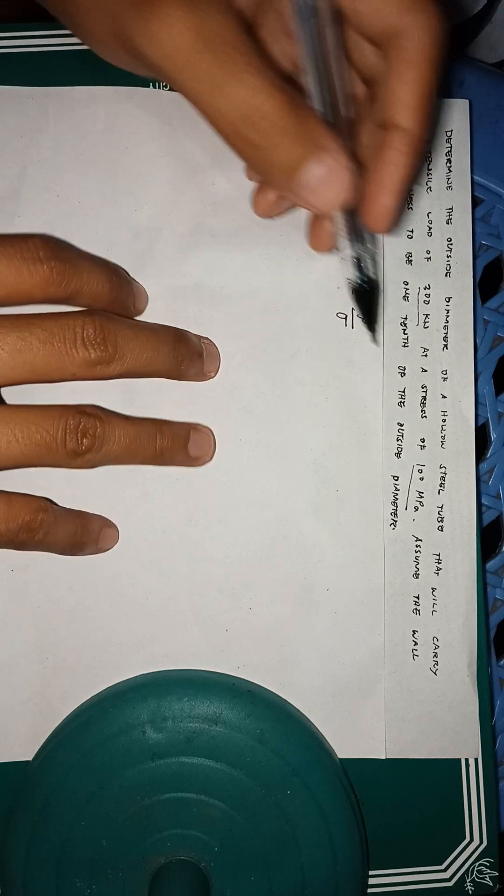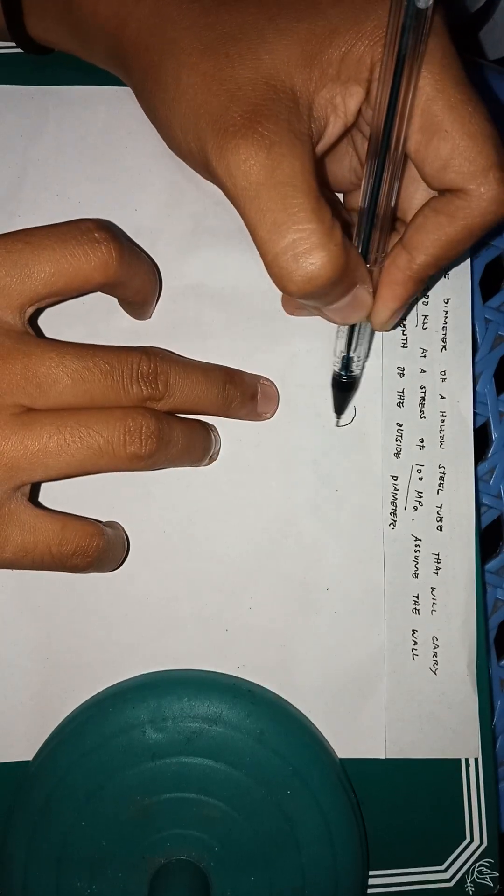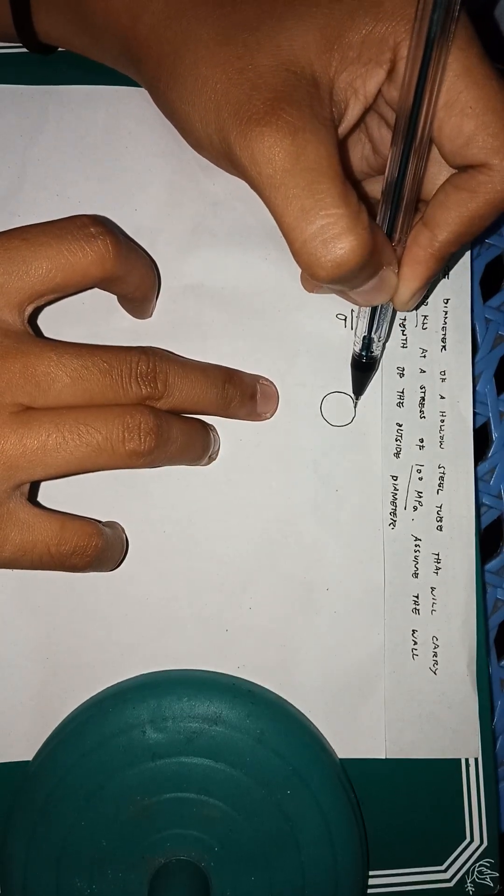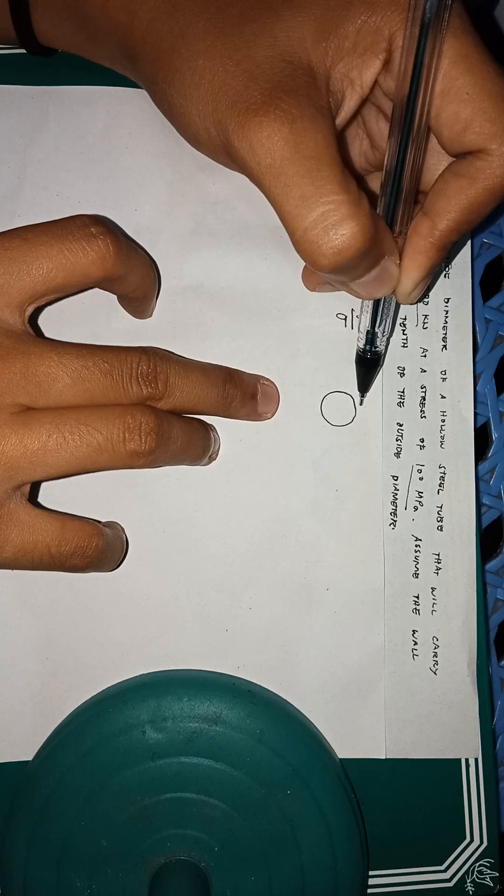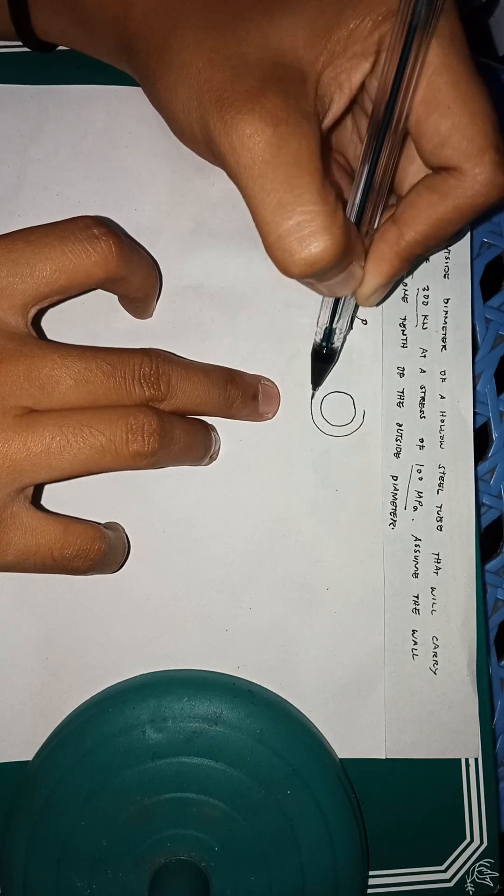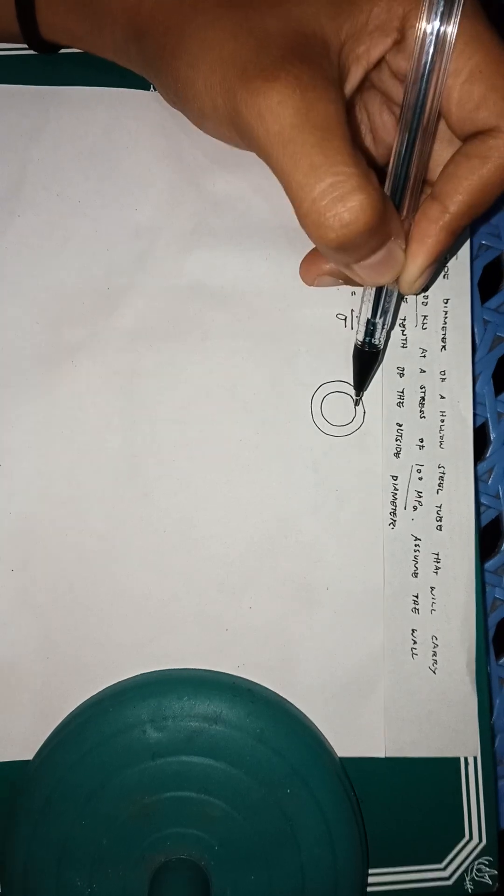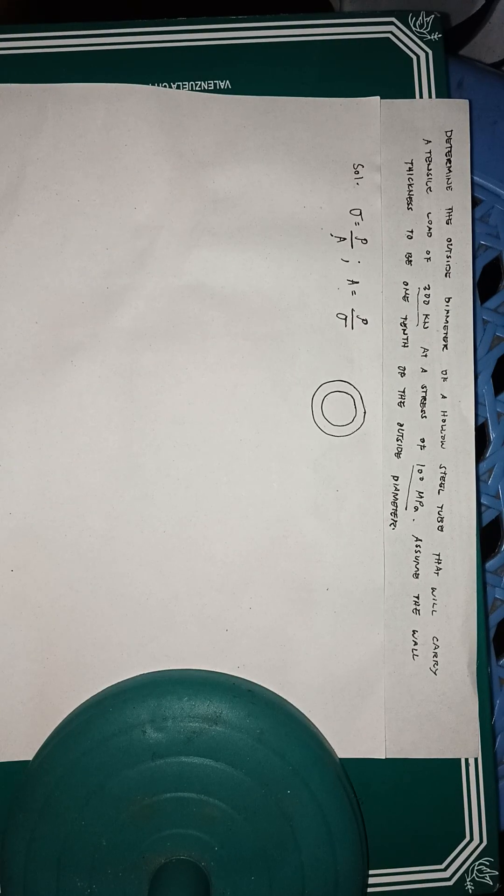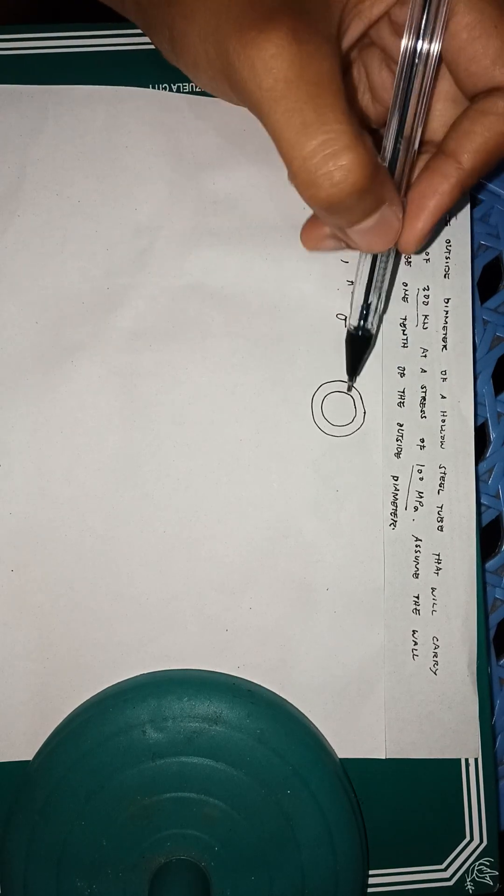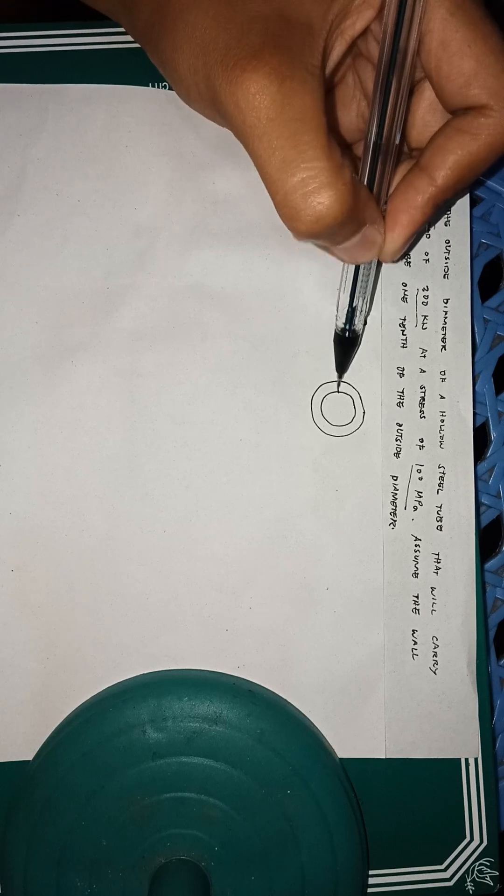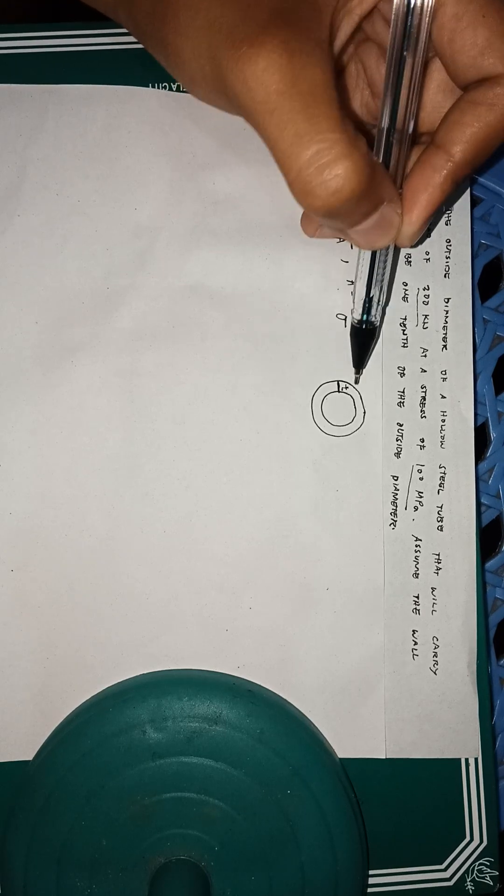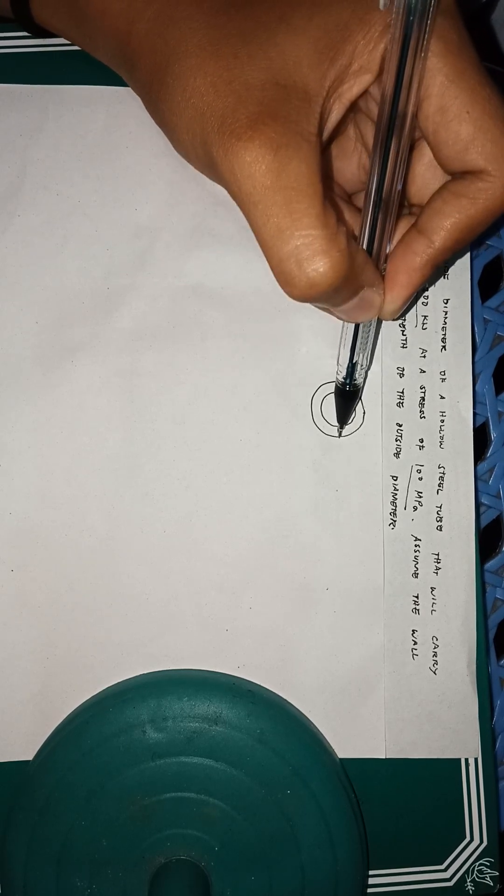Just change the places, so area equals force over stress. I'm gonna draw first the diagram so that you would understand and we will be able to get the formula for the diameter. This is a hollow steel tube, and here is the thickness.